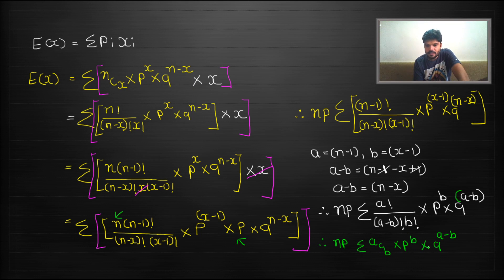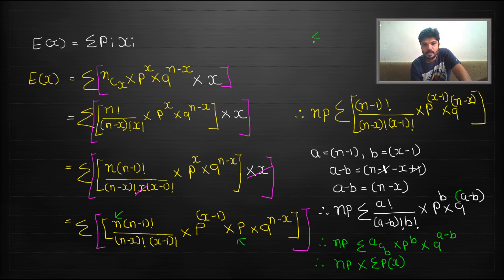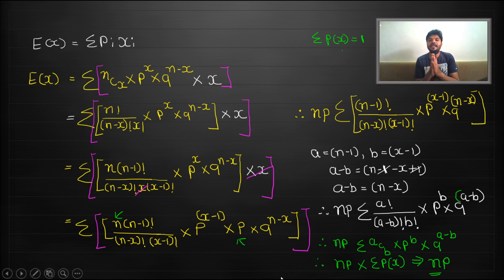Now this is very interesting — the expression inside the sigma, aCb · p^b · q^(a−b), looks exactly like the binomial probability mass function we started with: nCx · p^x · q^(n−x). So sigma of aCb · p^b · q^(a−b) is simply the sum of all probabilities, which equals 1. Therefore the expected value equals n·p times 1, which is n·p. It is thus proved that the mean of the binomial distribution is n times p.